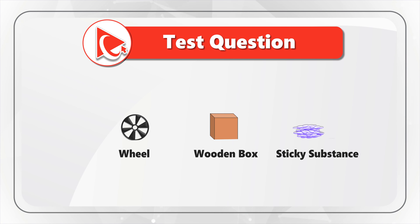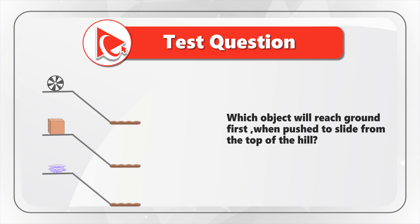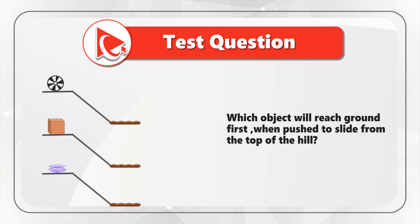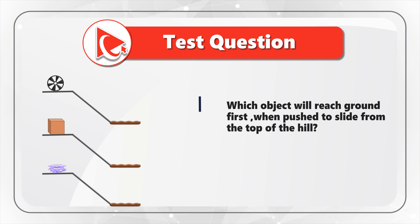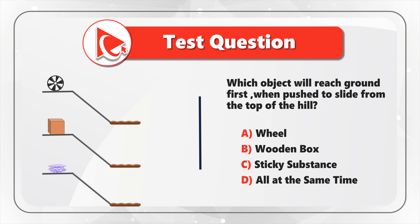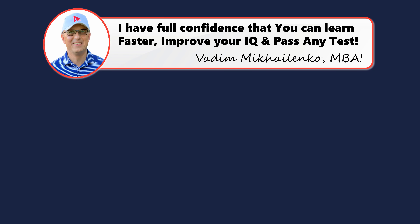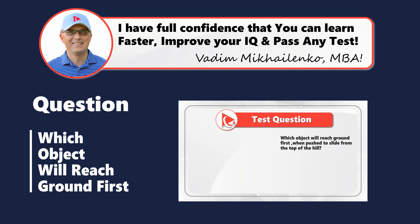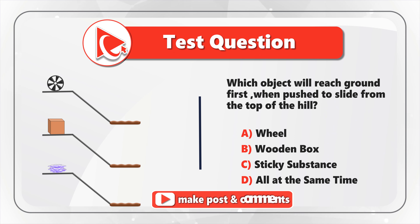You are presented with three different objects and need to determine which object will reach the ground first when pushed to slide from the top of a hill. You have four possible choices: Choice A, wheel; Choice B, wooden box; Choice C, sticky substance; and Choice D, they all reach the ground at the same time. To determine the answer, let's look at each object individually.